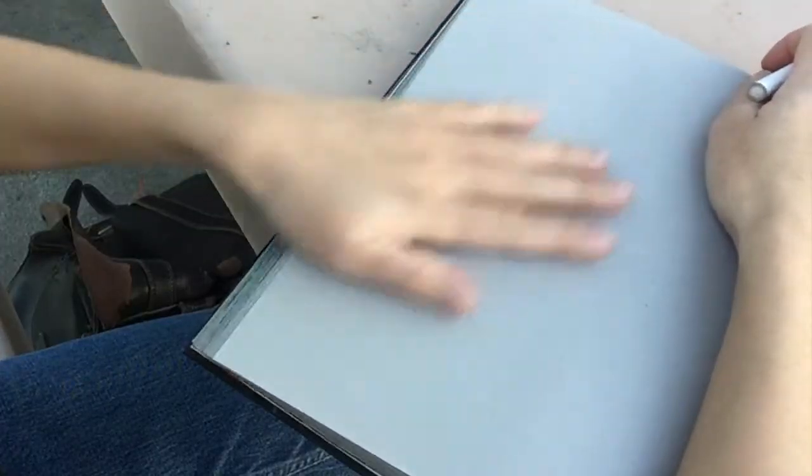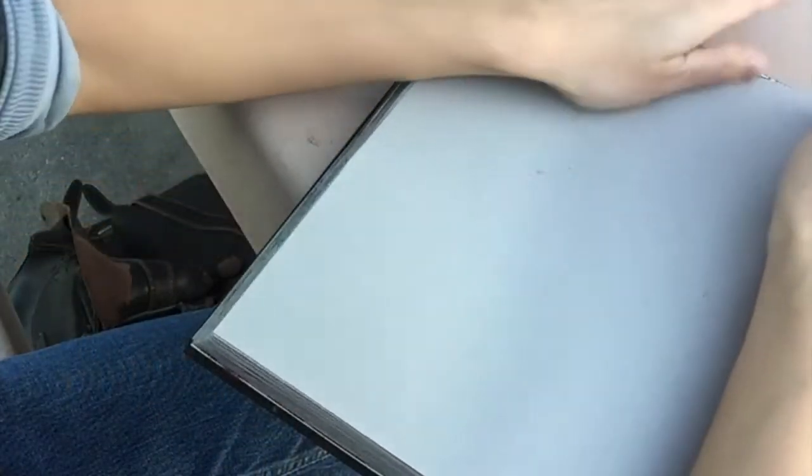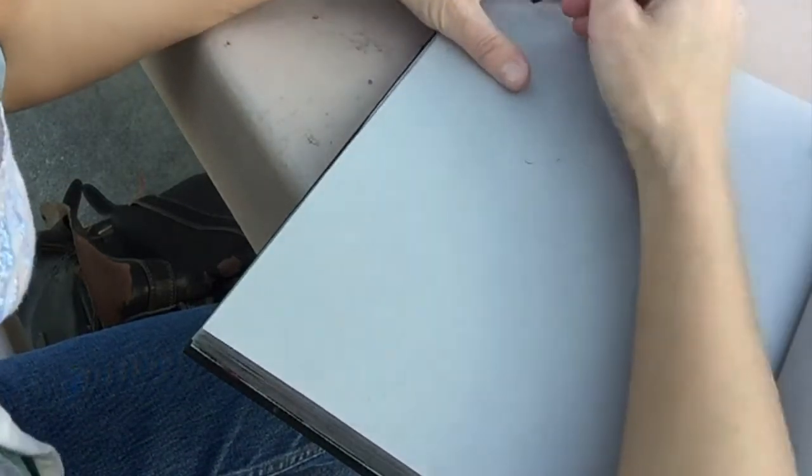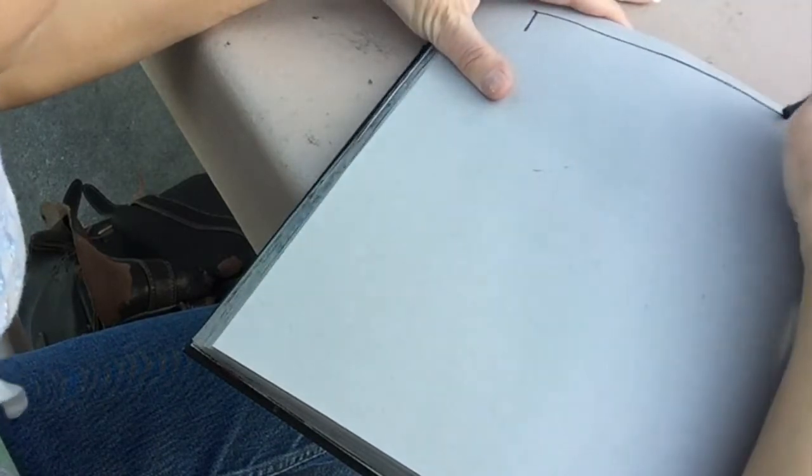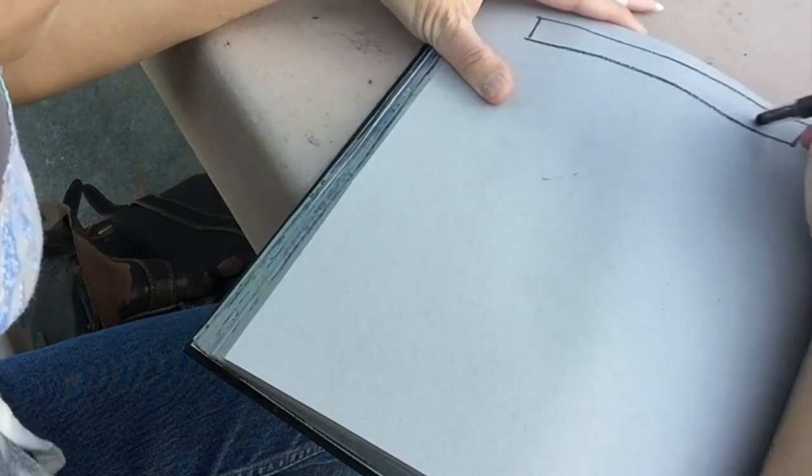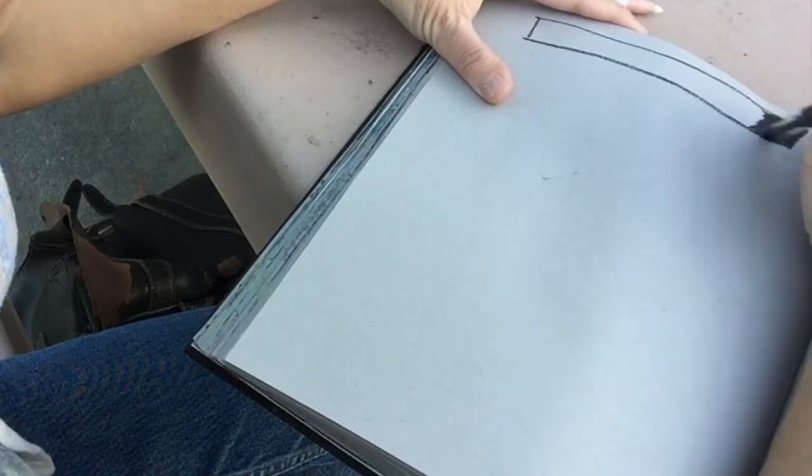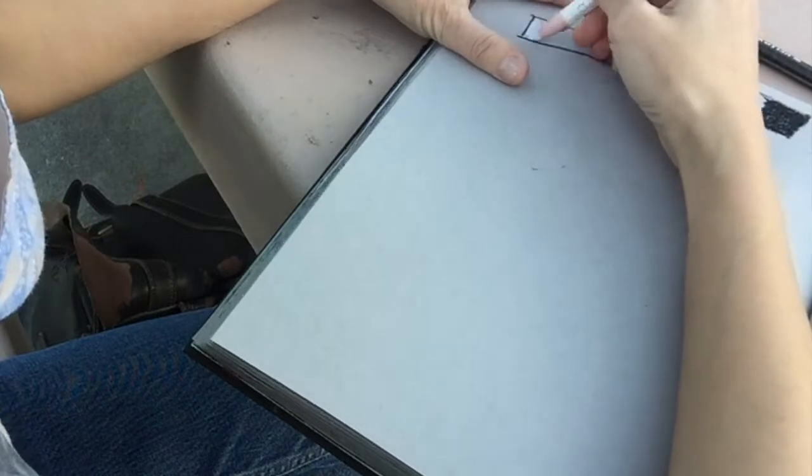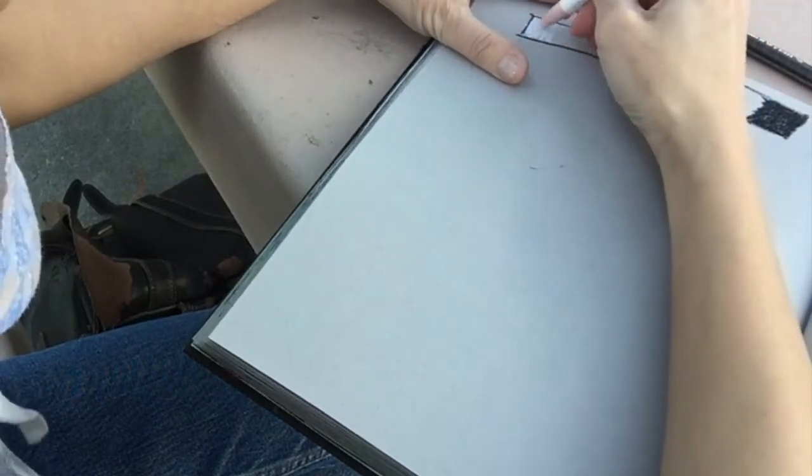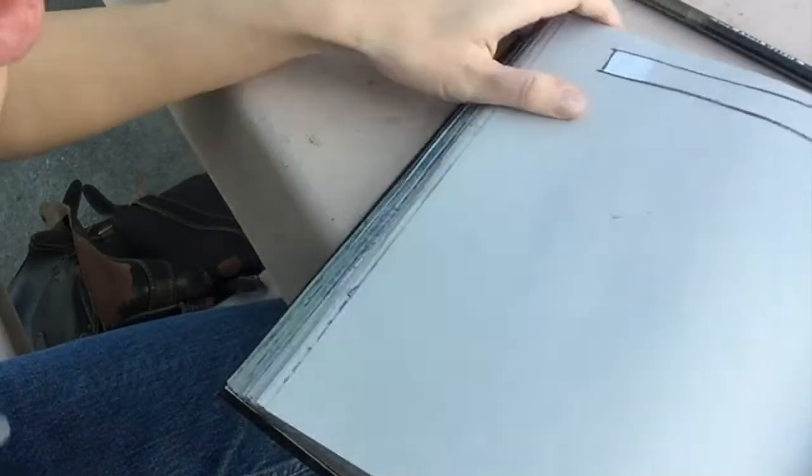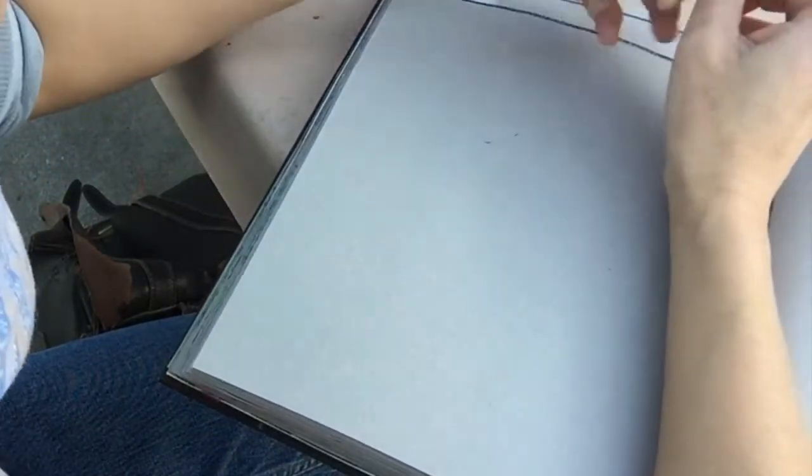If you're working with gray paper, it's already a mid-range value. We're talking about value, we're talking about dark to light. So let's say this is like the darkest shade you can get, okay? The white is the lightest, that's high value right, and that's low value.